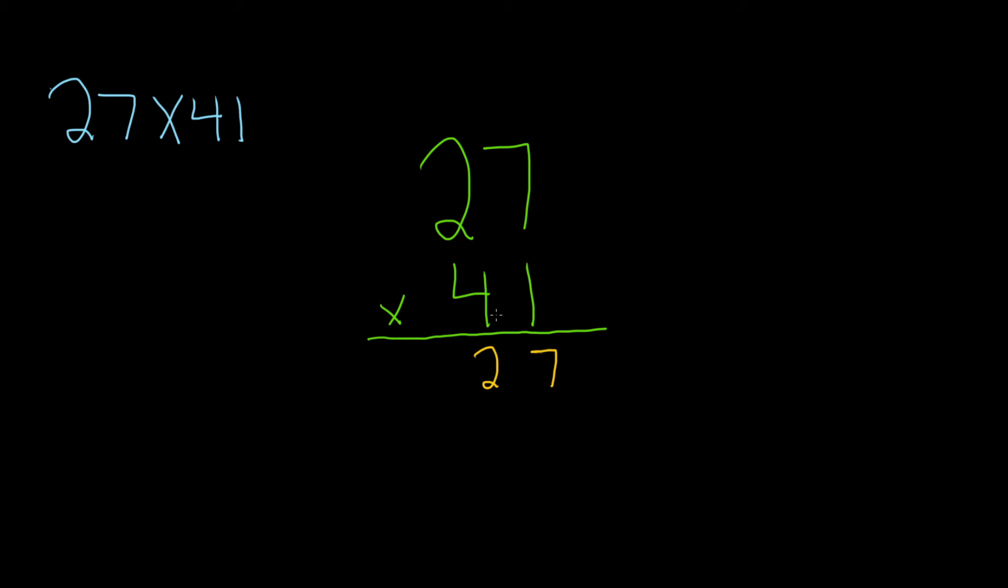Then you go to the next number, so 4. So 4 times 7, let's do that on the side, 4 times 7 equals 28. You can't fit 28 here, so what you do is just write the 8 down. So 4 times 7 is 28.